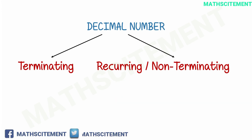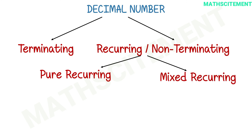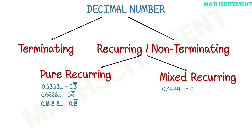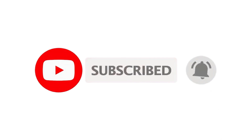Non-terminating recurring decimal numbers are further divided into two categories: pure recurring decimal numbers and mixed recurring decimal numbers. Pure recurring decimal numbers are those in which all the digits repeat infinitely. Mixed recurring decimal numbers are those in which some digits of the decimal part do not repeat and the rest repeat infinitely. Also remember that we draw a bar above the repeating digits.